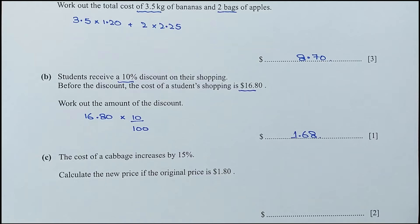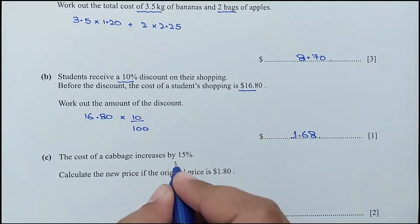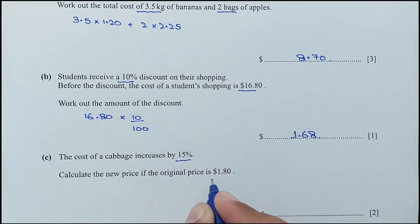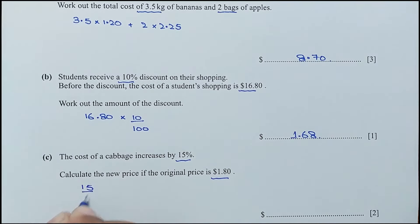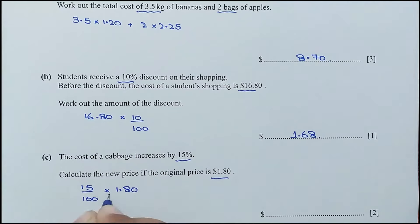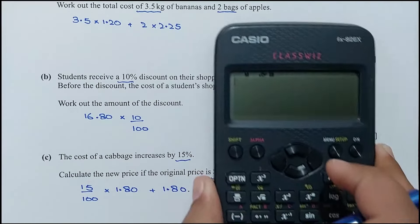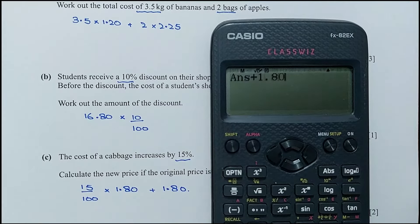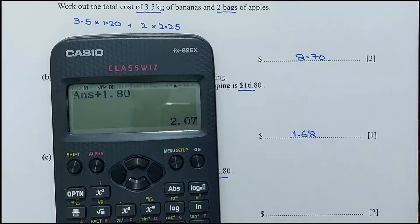For part C, the cost of a cabbage increased by 15%. Calculate the new price if the original price is $1.80. 15% of $1.80 added to $1.80 gives $2.07. So the new price is $2.07.